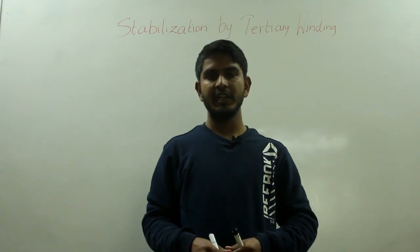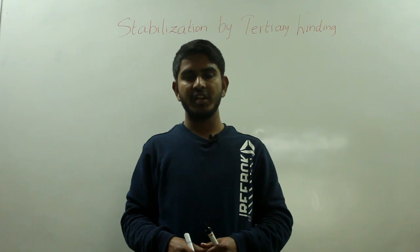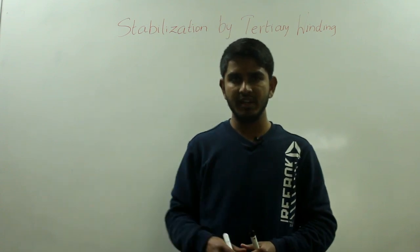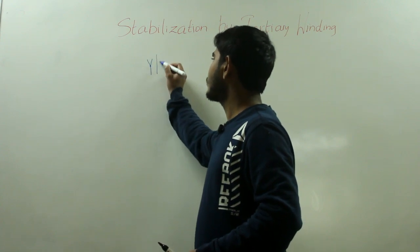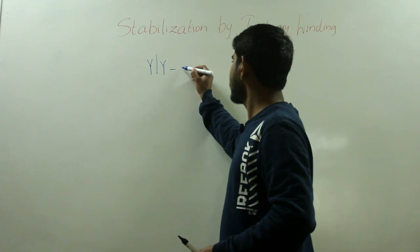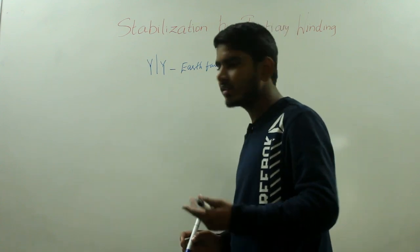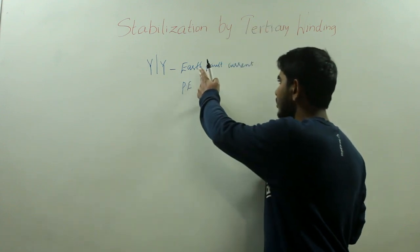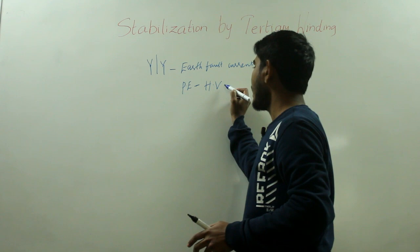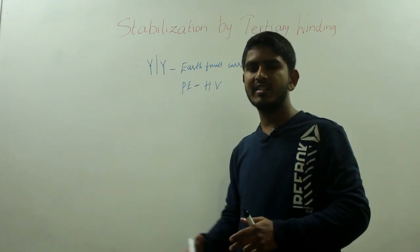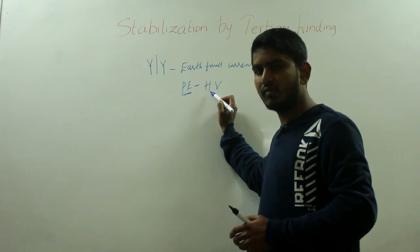Hello friends. In this video, let us discuss stabilization by tertiary winding. In our last video on the three-winding transformer, we discussed the several uses of having a tertiary winding. One important advantage is that in a star-star connected transformer, the tertiary winding allows sufficient earth fault current to flow for the operation of protective equipment, to suppress harmonic voltages, and to limit voltage unbalancing when the main load is unsymmetrical.